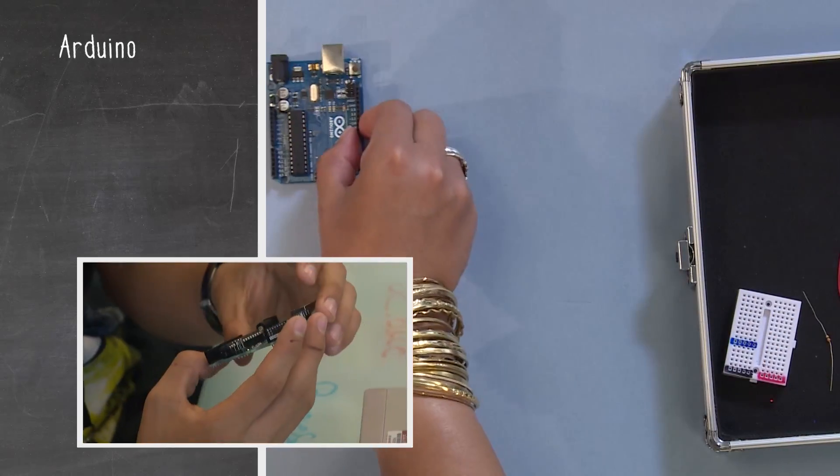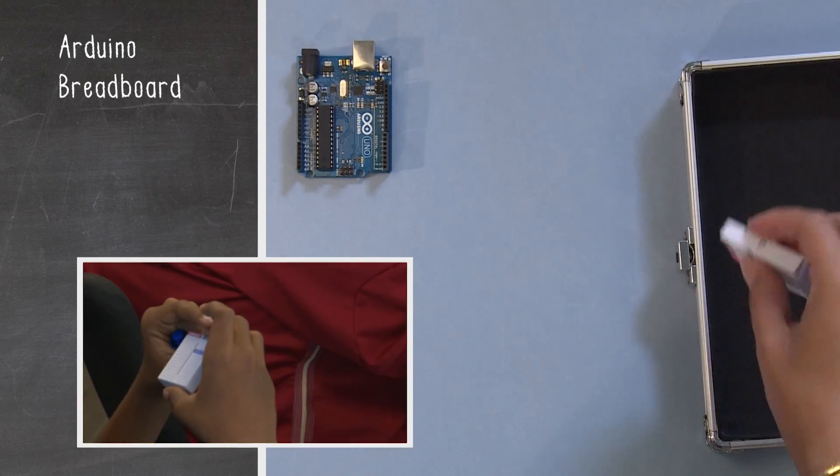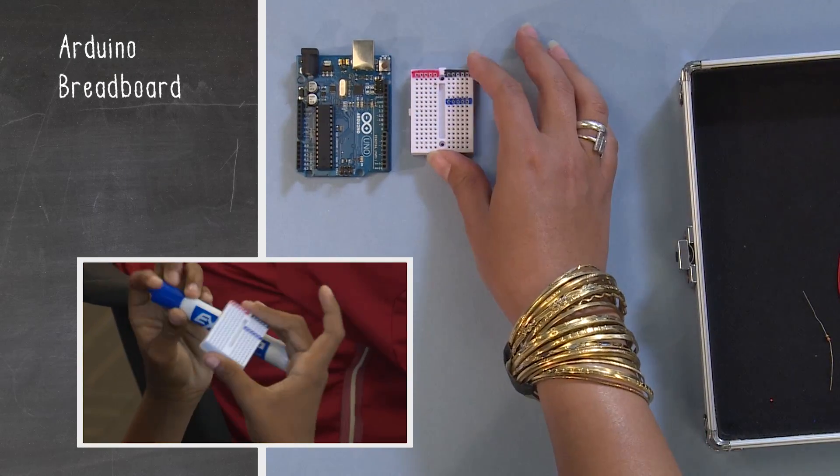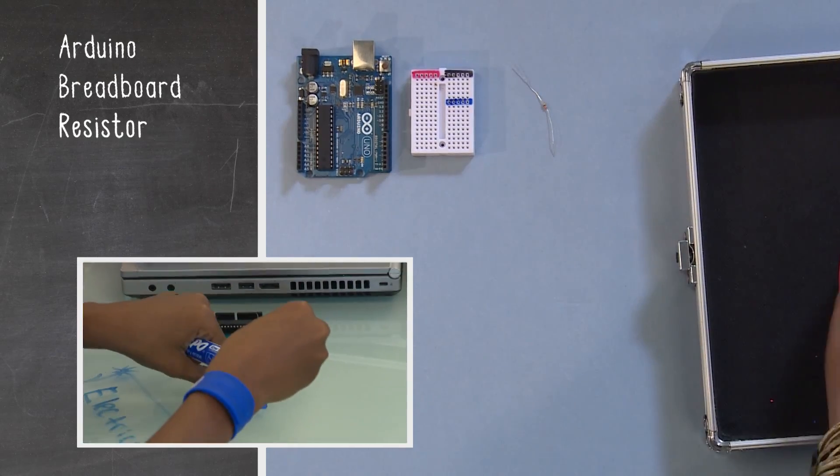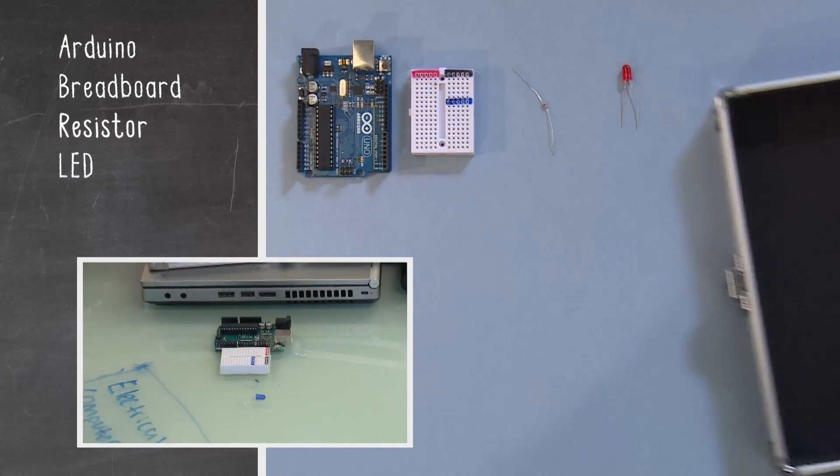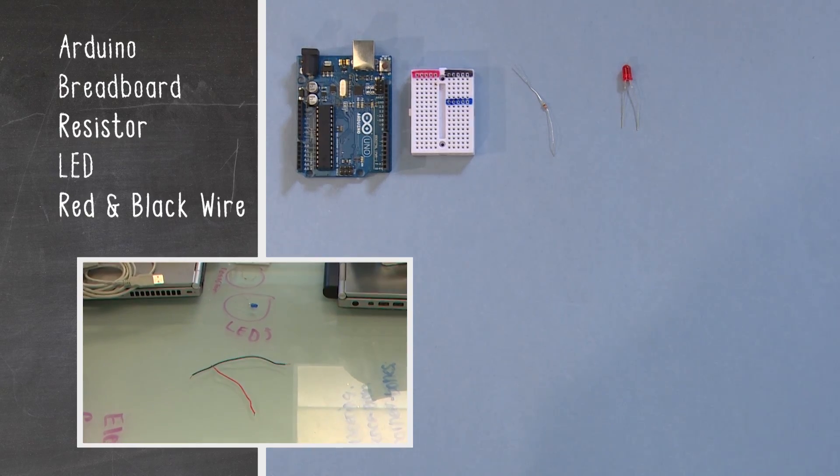You will need an Arduino. You will need a breadboard, and hopefully you've already got it color-coded. You'll need a resistor, you'll need an LED, and of course, you'll need a red and black wire.